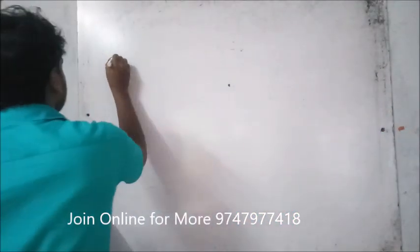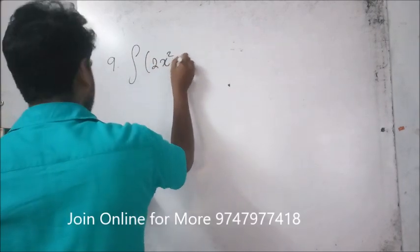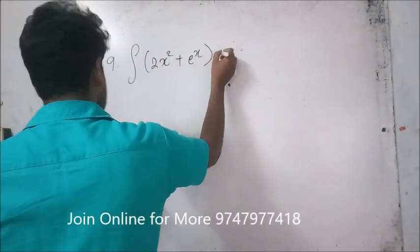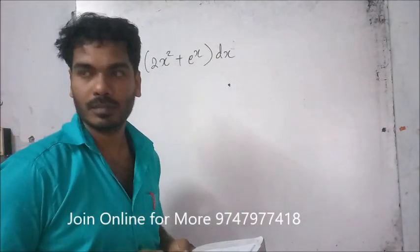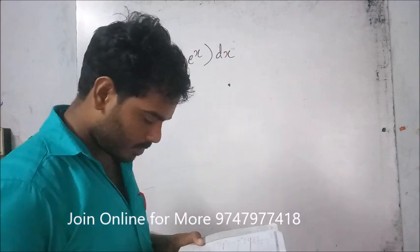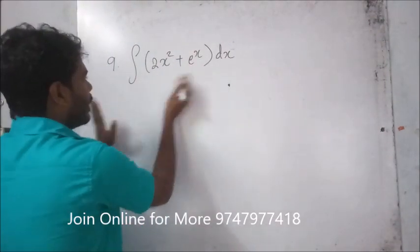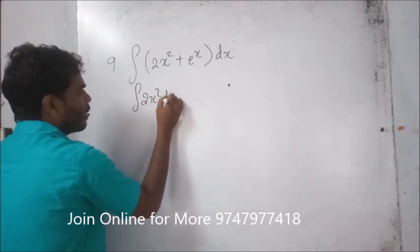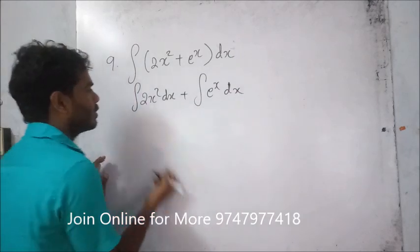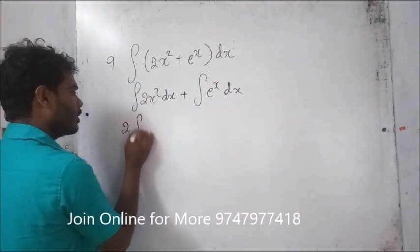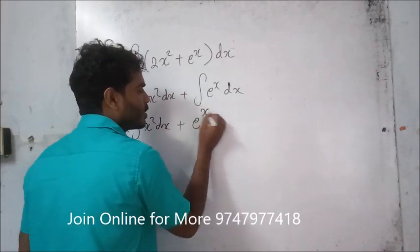Question 9: integration of 2x squared plus e raised to x dx. We split this as integration of 2x squared dx plus e raised to x dx. Since 2 is a constant, this becomes 2 times integration of x squared dx plus e raised to x in integration, giving e raised to x.